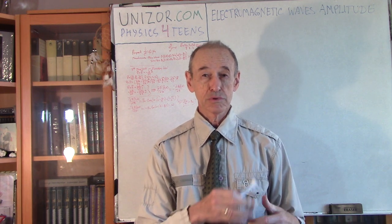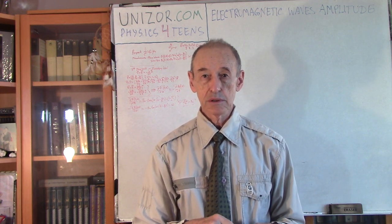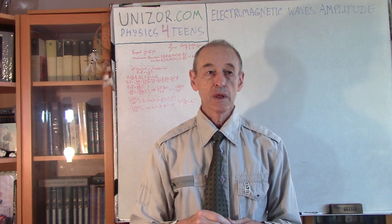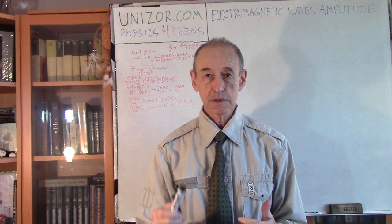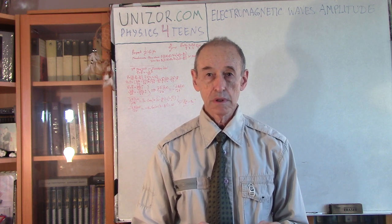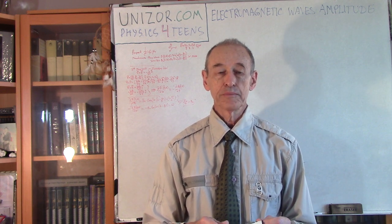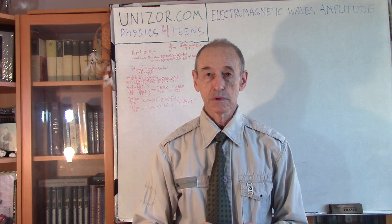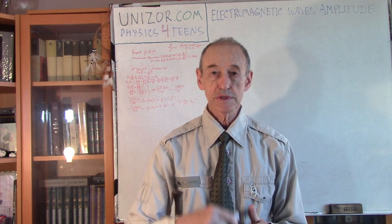I suggest you refresh it if you don't remember what's in there. It's the previous item on the menu, just prior to this one, called speed of light. You go to course physics for teens on unizor.com and choose the waves part.